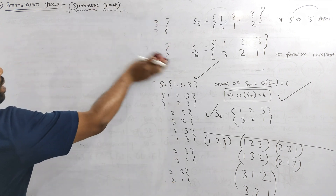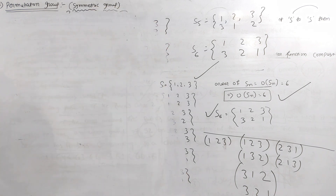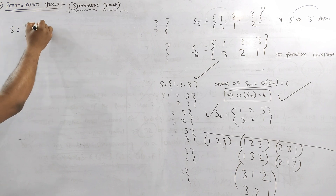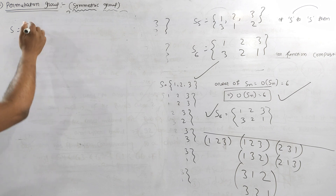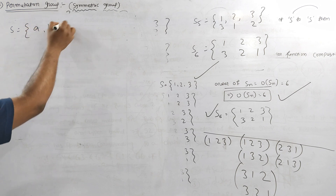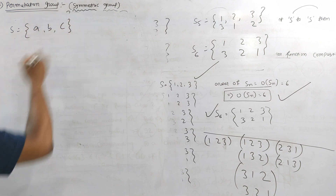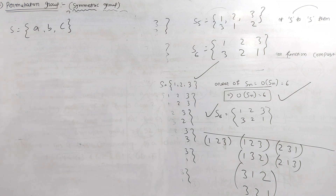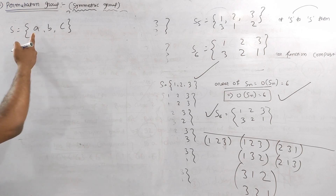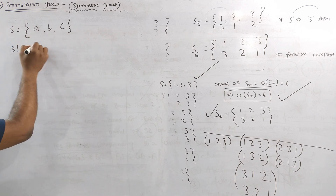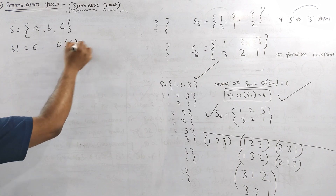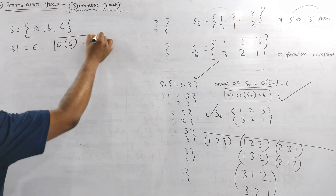There is no problem. The problem is S has elements a, b, c. So here is a problem. If the total number of elements is 3, then 3! is equal to 6. The order of S3 is 6, so it's a small permutation.